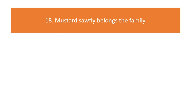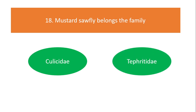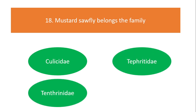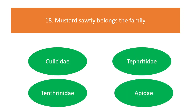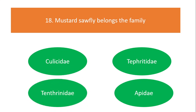Mustard sawfly belongs to which family? Options are Culicidae, Tephritidae, or Apidae. The answer is Apidae. And the order of mustard sawfly is Hymenoptera.